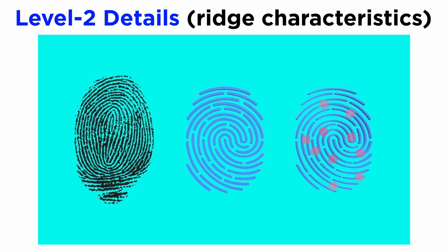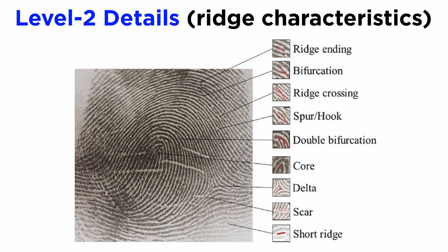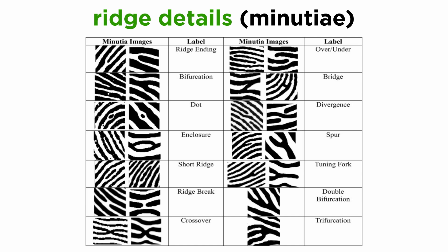However, to identify an individual from a given fingerprint impression, the mere classification of the pattern is not enough. The fingerprint needs to have a sufficient number of matching ridge characteristics. These ridge characteristics are known as level two details. Individual ridges on our palms and soles are not continuous lines, but are characterized by certain breaks and interruptions. Ridges can also diverge or bifurcate into two branches. These phenomena give rise to different types of ridge details. Such details are minute and can be observed clearly only with the help of a magnifying aid. This is why these details are called minutiae.